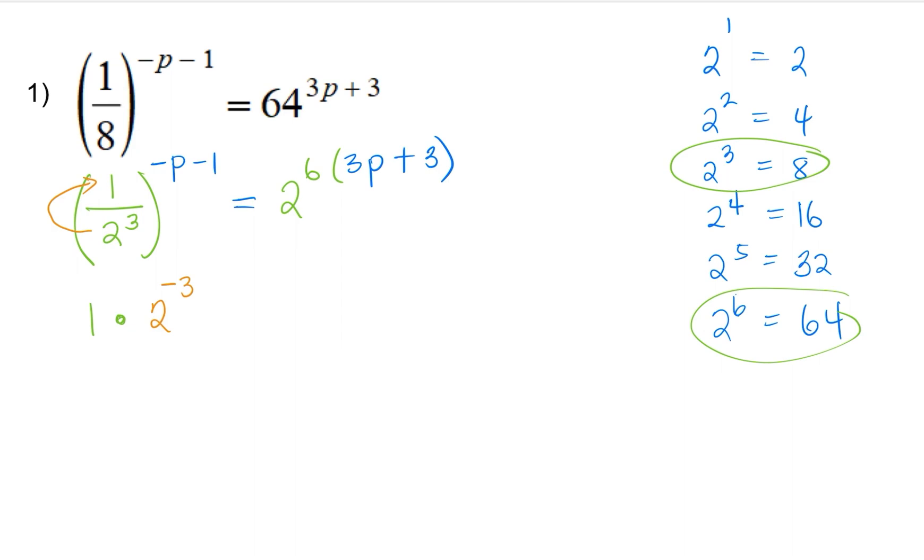So then we are going to drop the original exponent, which is negative p minus 1 in parentheses because it is a binomial. So binomial meaning two terms, negative p minus 1. So let's drop the right-hand side, 2 to the power 6. We can start multiplying, or we can multiply later. So 3p plus 3.